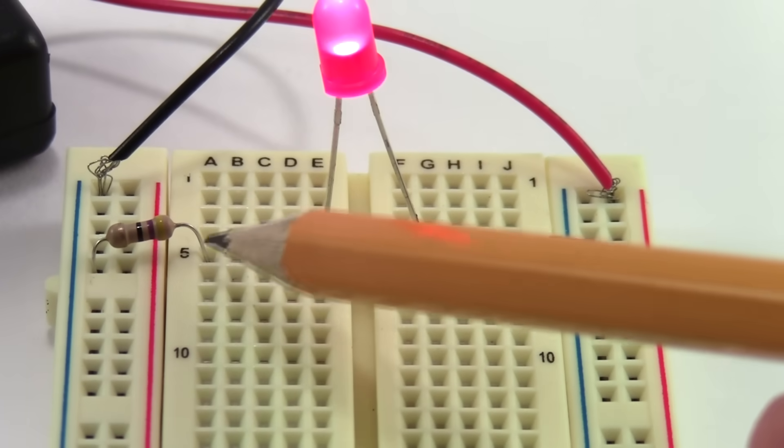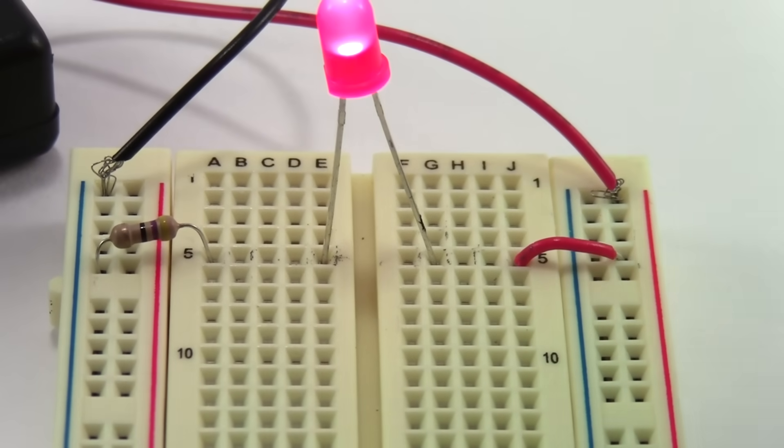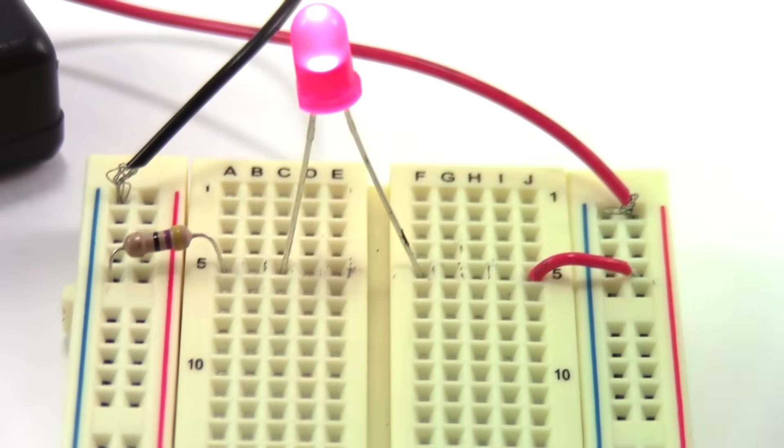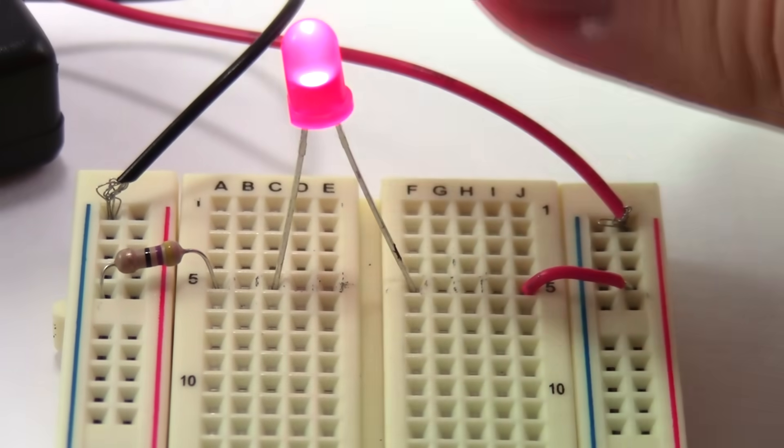Remember that on each separate half of the breadboard, the holes in row five are electrically connected to each other. This means, for example, that I can take the leads of the LED and move them to different holes in row five and it will still light up.